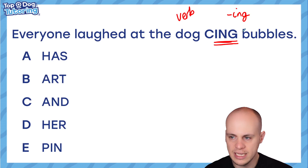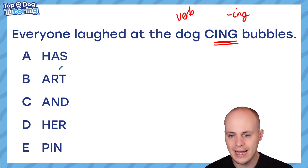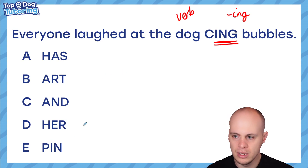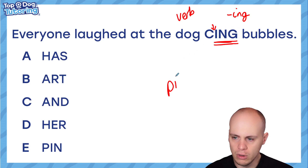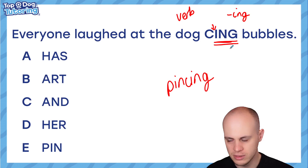The dog eating bubbles? No, that wouldn't have a C in it — it's not going to be eat. E-A-T-I-N-G doesn't work. Let's look at our options: HAS, ART, AND, HER, and PIN. PIN — if we put PIN in here we get caping, or we get pinsing before it. Everyone laughed at the dog pinsing bubbles. Doesn't make sense.